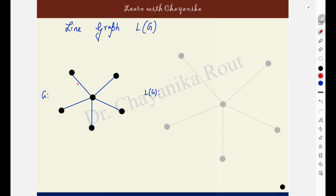Here you have edges: A, B, C, D, E. I am labeling the edges. There are 5 edges so I have labeled them A, B, C, D, E. Because in the line graph you are going to have as many vertices as there are edges in the original graph.